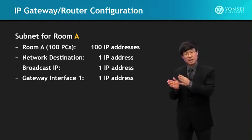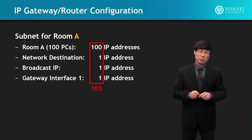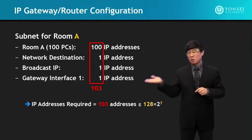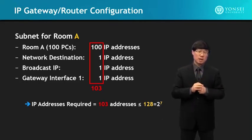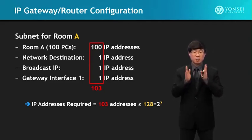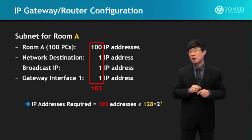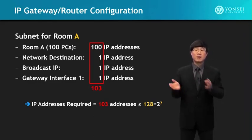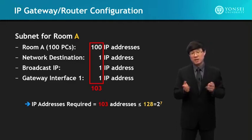IP addresses 101 to 125 are reserved for future use — you can assign additional computers using them, but if not assigned they will be wasted. This is why subnetting makes the Internet extremely scalable and efficient to manage, though the subnetting architecture does result in some wasted IP addresses. We needed 103 but got 128 as the subnet size. There is a notation called CIDR — classless inter-domain routing — which gives an assignment mechanism to write the network destination and subnet mask together in one notation.